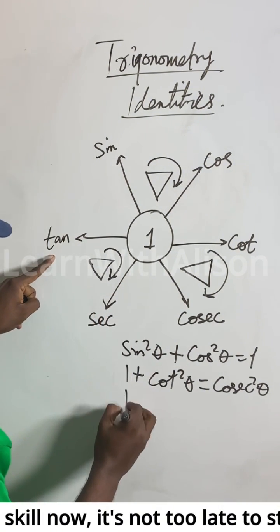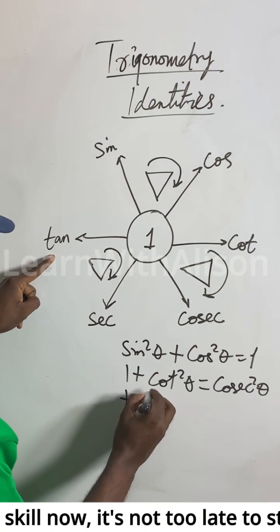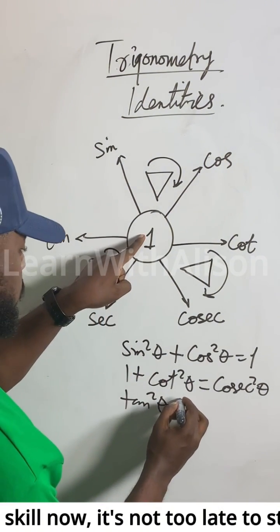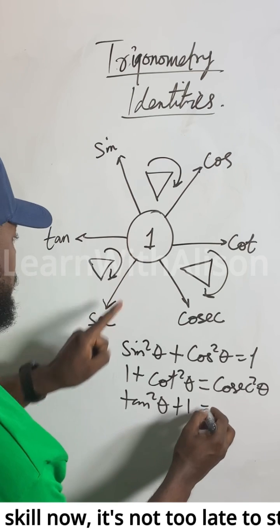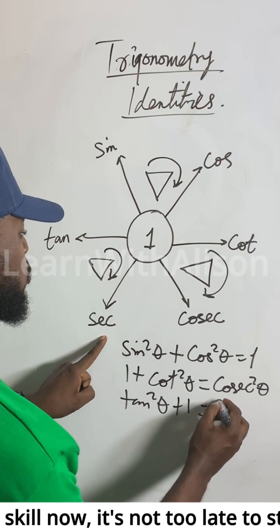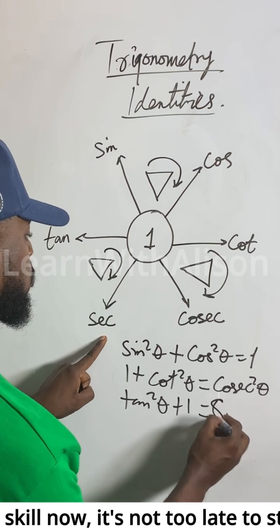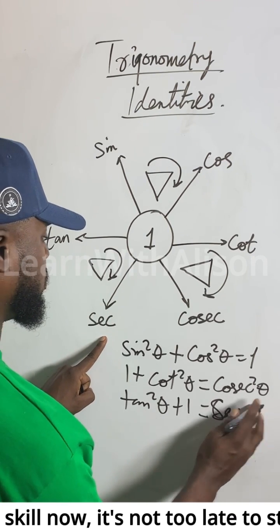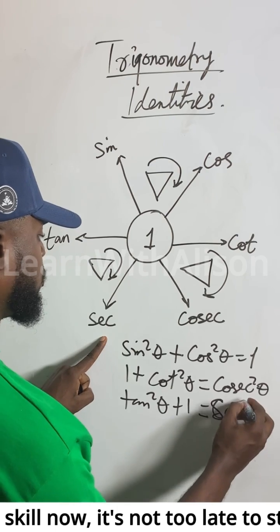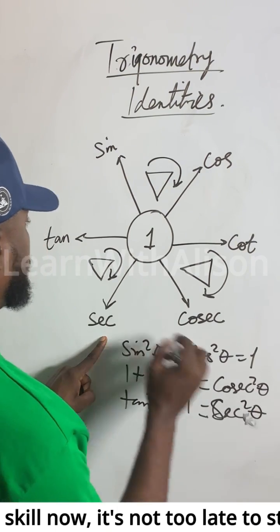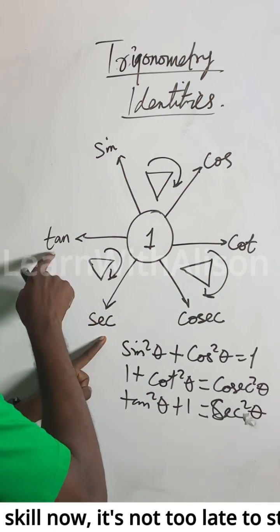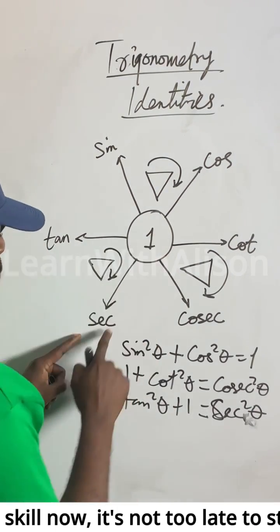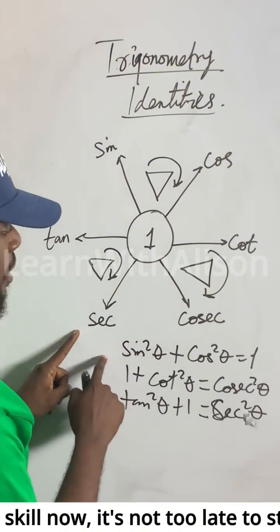tan²θ + 1 = sec²θ. Look at it — tan²θ plus one will give you sec²θ.